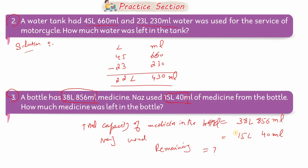Subtraction کریں گے: 6 میں سے 0 کم کرو 6 بچے گا، 5 میں سے 4 کم کرو 1 بچے گا، 8 میں سے 5 کم کرو 3 بچے گا، 8 میں سے 3 — wait — 3 میں سے 1 کم کرو 2 بچے گا۔ پتا چل گیا کہ 23 liters اور 816 milliliters medicine بچے گی bottle میں use کرنے کے بعد۔